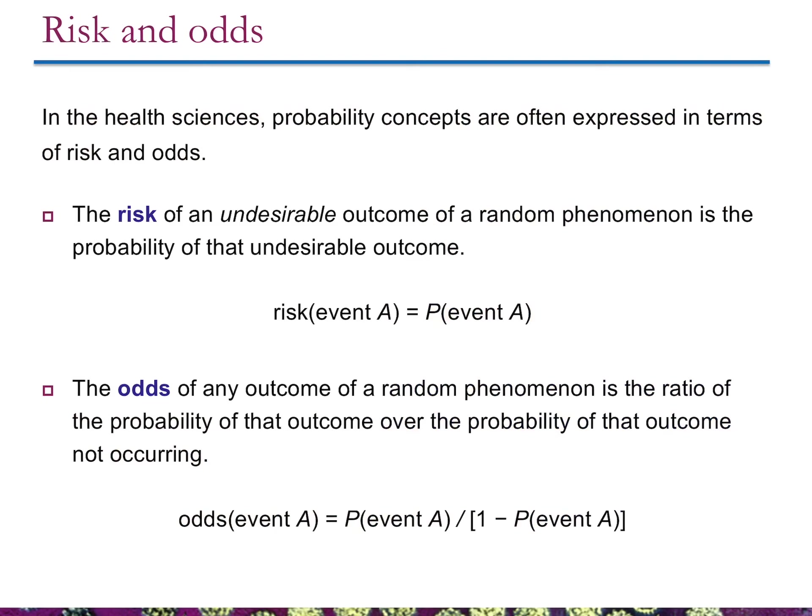The last thing to discuss is the concept of risk and odds — something people get wrong all the time, especially in news media. In the health sciences, probability concepts are often expressed in terms of risk and odds. Risk is simply the probability of some outcome. If we're talking about disease, the risk of an undesirable outcome is the probability of that outcome — for example, the risk of developing colon cancer equals its probability. Risk is straightforward.